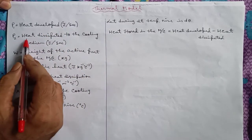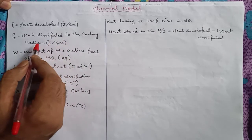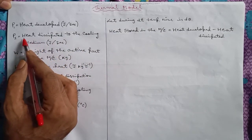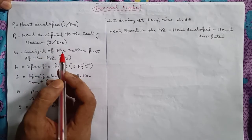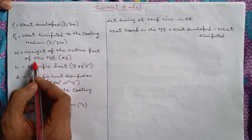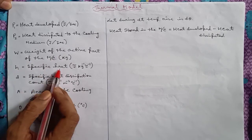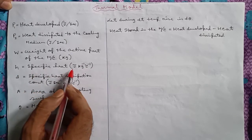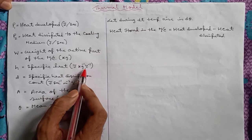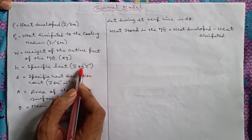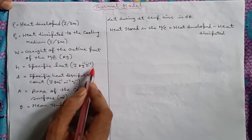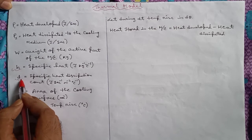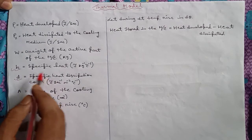P1 is the heat developed in the machine; its unit will be joule per second. P2 is the heat dissipated to the cooling medium such as oil, water, or air — anything can be the cooling medium — and P2 denotes the heat dissipated to that cooling medium in joule per second. W is the weight of the active part of the machine. H is the specific heat in joule per kilogram per degree centigrade; it represents how much energy in joule is required to increase the temperature by one degree of one kilogram of material of the machine. It is a property of the material.